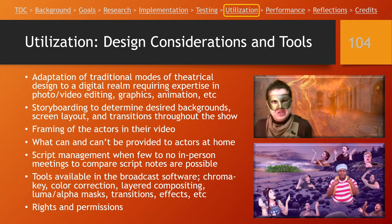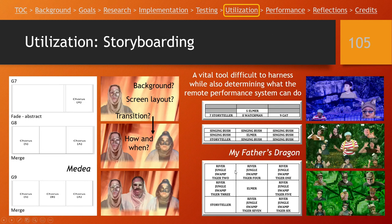Design considerations include adapting traditional modes of theater design to a digital realm we don't normally work in. There's expertise required in this format that we don't lean on as much in traditional theater. There's no physical scenery anymore — now scenery is all created by photo and video editing, graphics, and animation. Storyboarding is a big part of this process — going through the script and deciding scene by scene how to lay out the screen, where actors will be, what background to use, and how to transition from one scene to the next. This is a look at some storyboarding we did for Medea on the left and My Father's Dragon on the right.